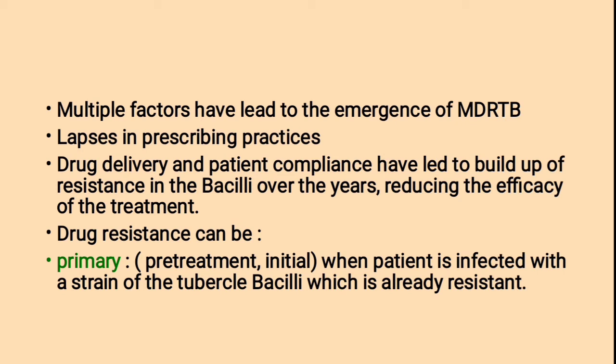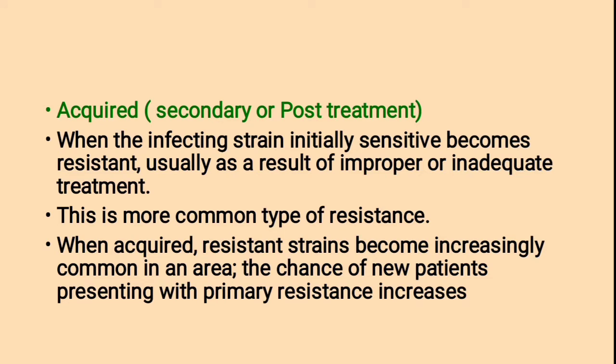Drug resistance is classified into two types: primary and secondary. Primary (pre-treatment or initial) drug resistance means the patient is infected with a strain of tubercle bacillus that is already resistant. Secondary (acquired or post-treatment) resistance means the infecting strain was initially sensitive but becomes resistant, usually as a result of improper or inadequate treatment. This is the more common type of resistance in TB patients.